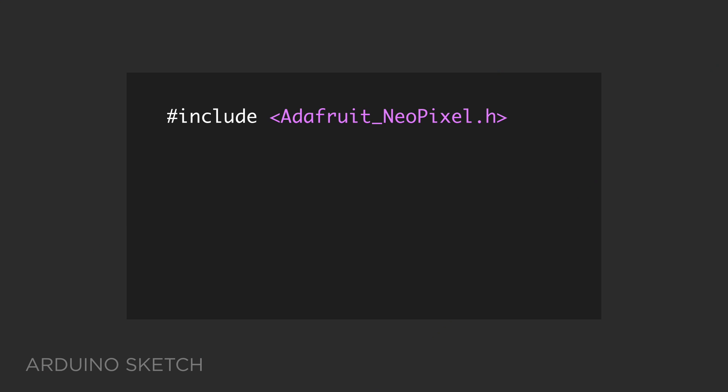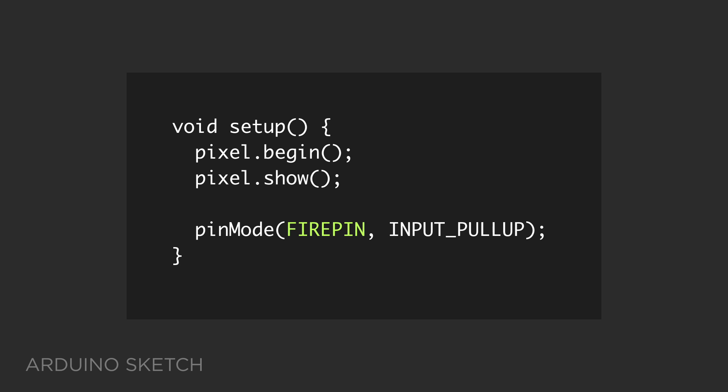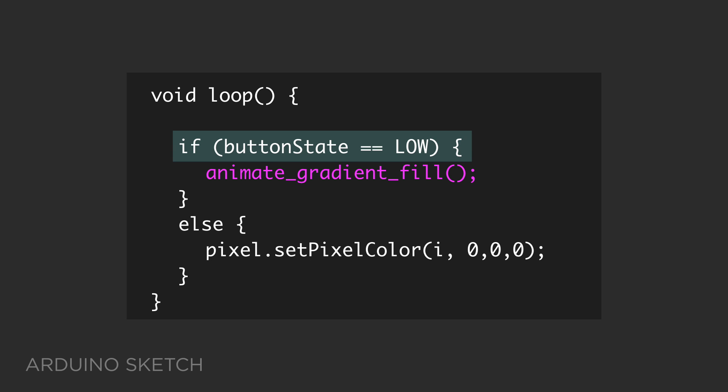In the Arduino sketch, we'll import the NeoPixel library, define the pins and number of pixels. We'll also create the NeoPixel object. In the setup, we'll initiate the NeoPixel and set the button pin as a pull-up input. Then, in the loop, we'll say if the button is set low, then run the animation function.